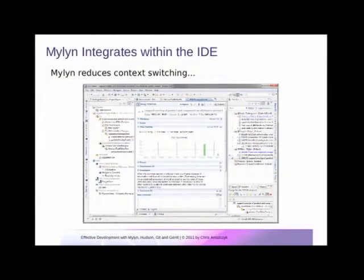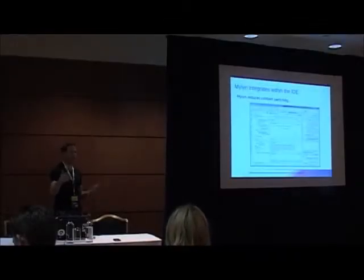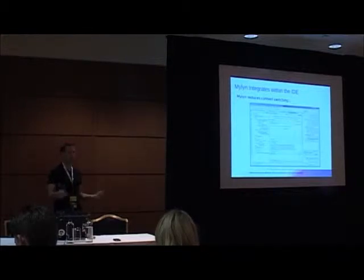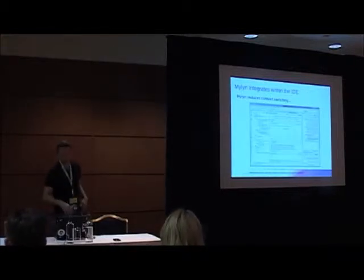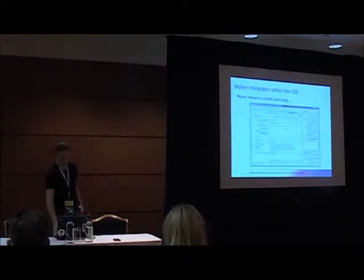Essentially, what Mylyn does is reduce your context switches. In the past as a developer, I have a Hudson instance running, I have Gerrit, I have Bugzilla, and I'm always alt-tabbing between my actual development environment and a browser to pull data from Hudson and build reports. Mylyn reduces all this context switching and brings everything integrated into Eclipse, so you end up saving quite a bit of time when you don't have to keep paging to the browser to get your information.